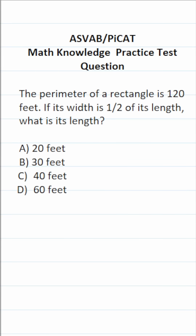This math knowledge practice test question for the ASVAB and PVKET says: the perimeter of a rectangle is 120 feet. If its width is one half of its length, what is its length?